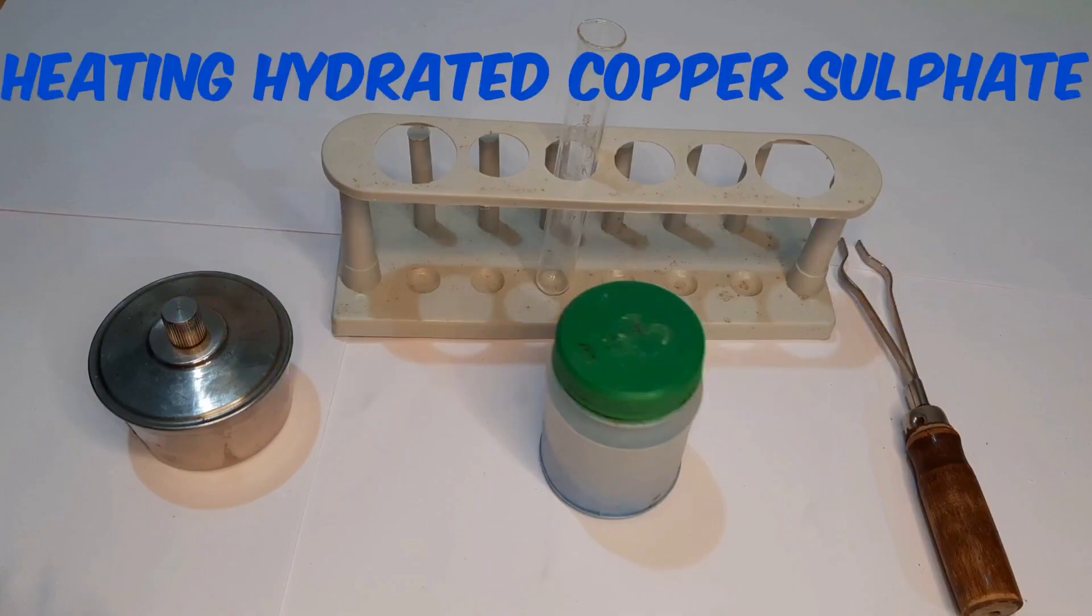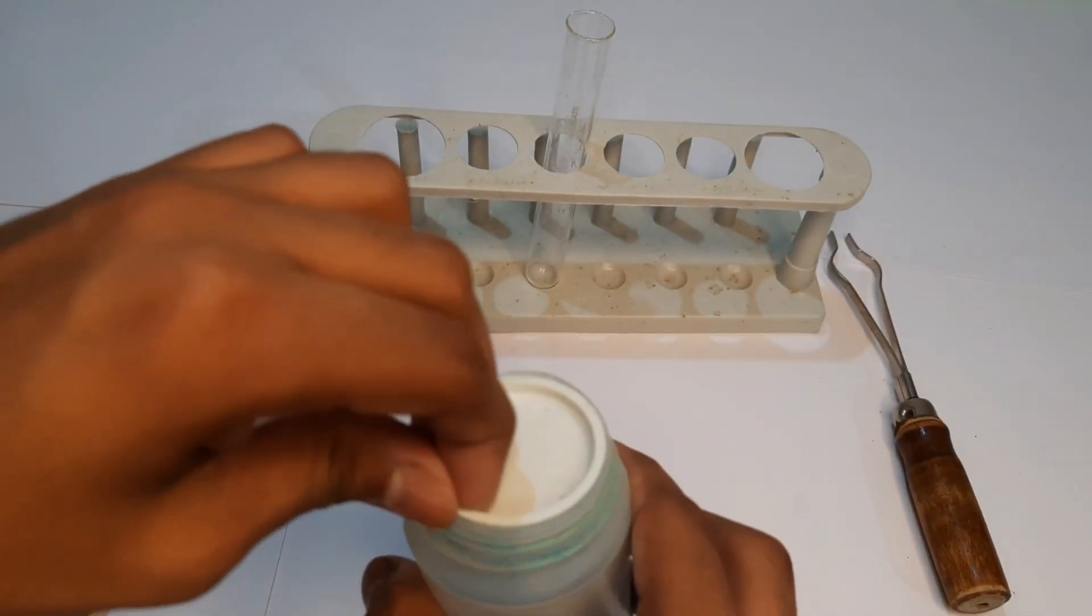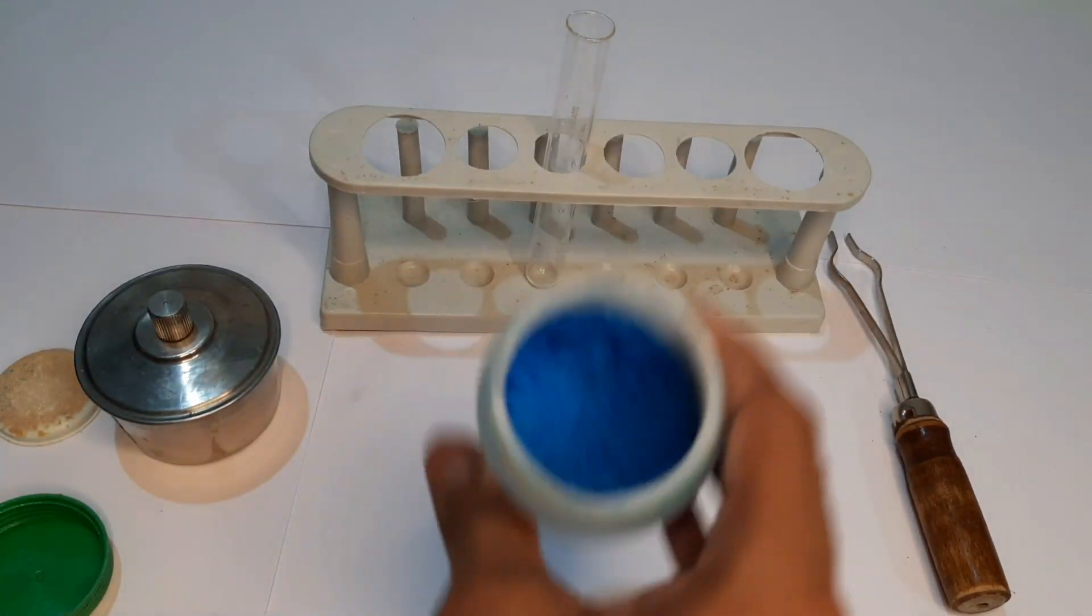Today we are going to see the effect of heating on hydrated copper sulfate. For this activity, take copper sulfate in a test tube which is blue in color.